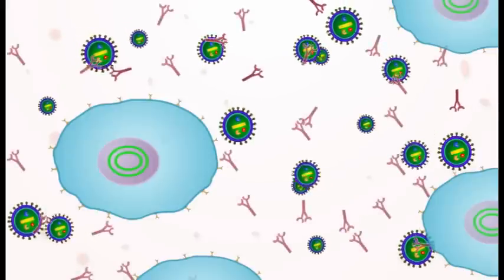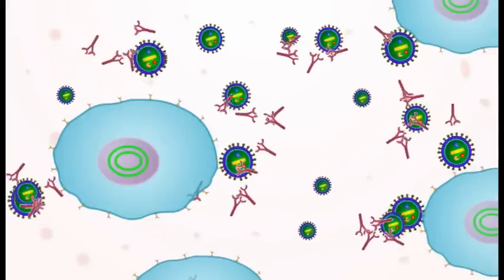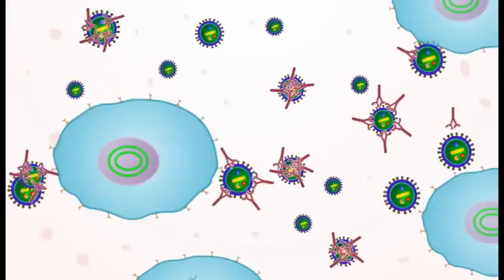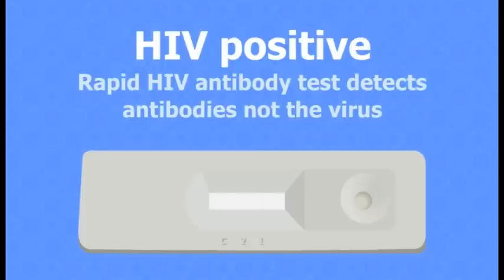Within about one to two months, the body begins to produce antibodies to fight the virus, and viral levels drop. The rapid HIV antibody test detects these antibodies, not the virus.